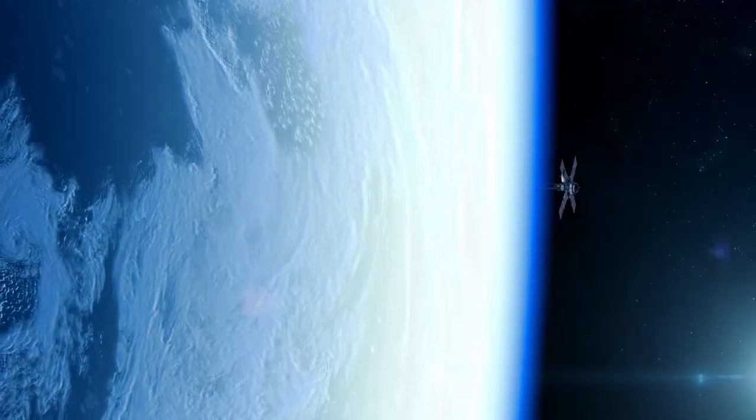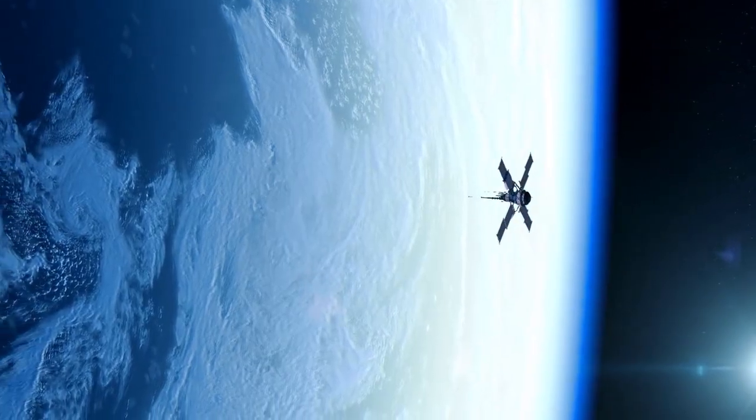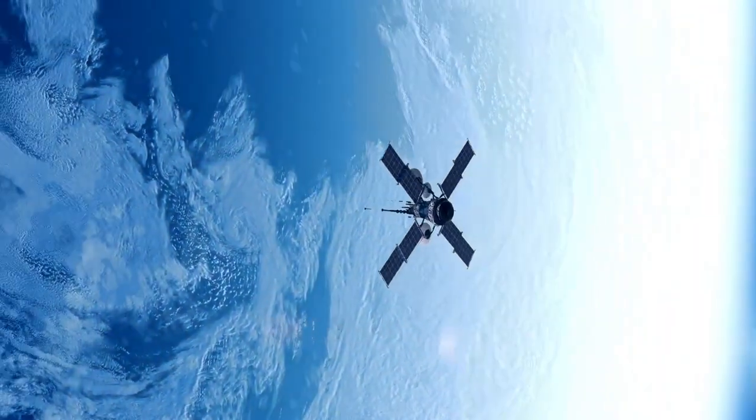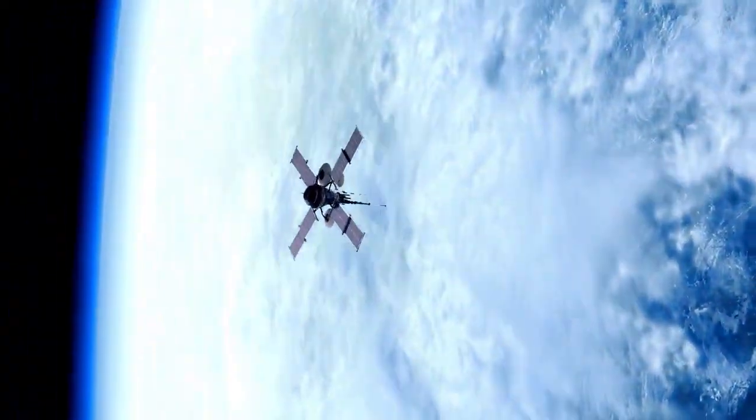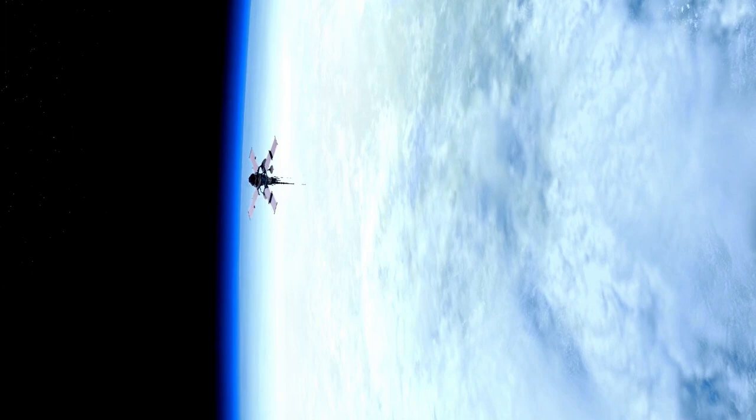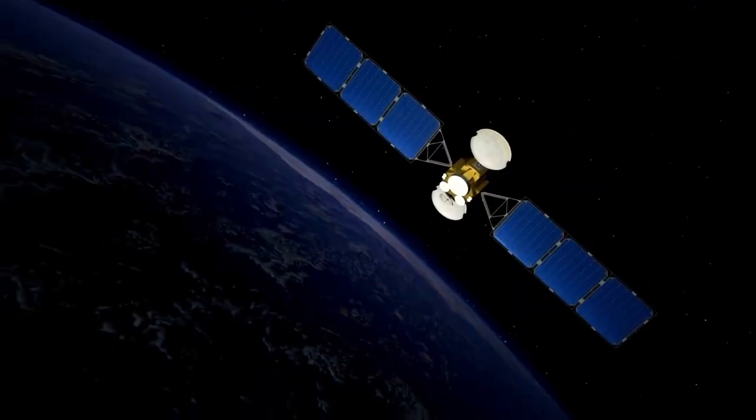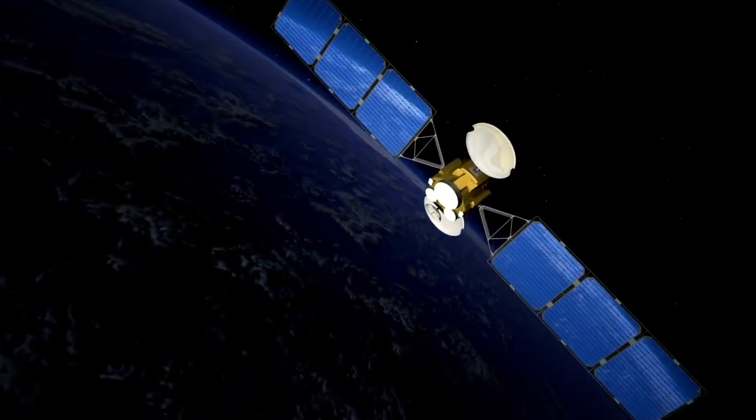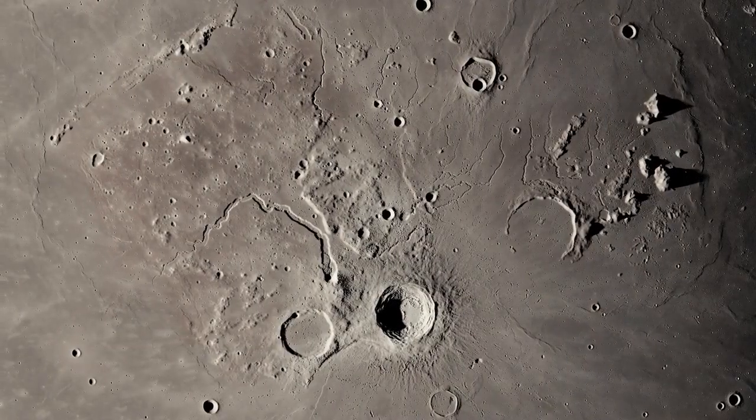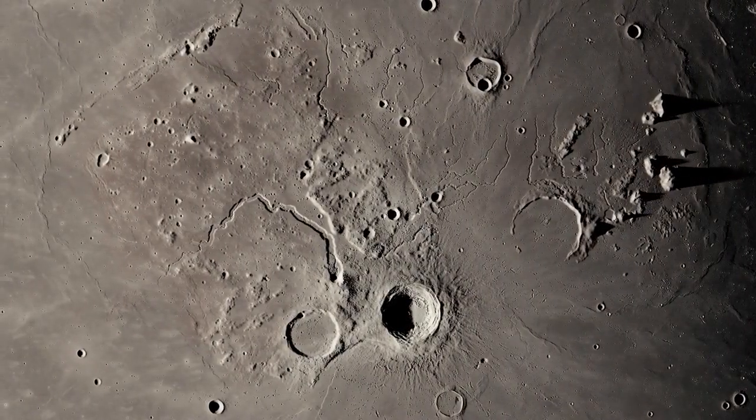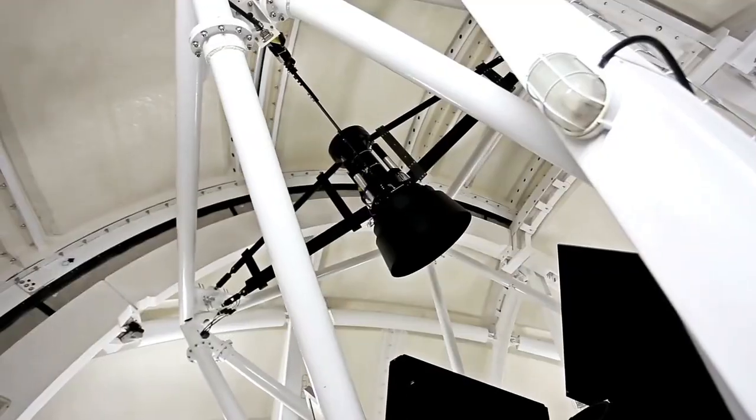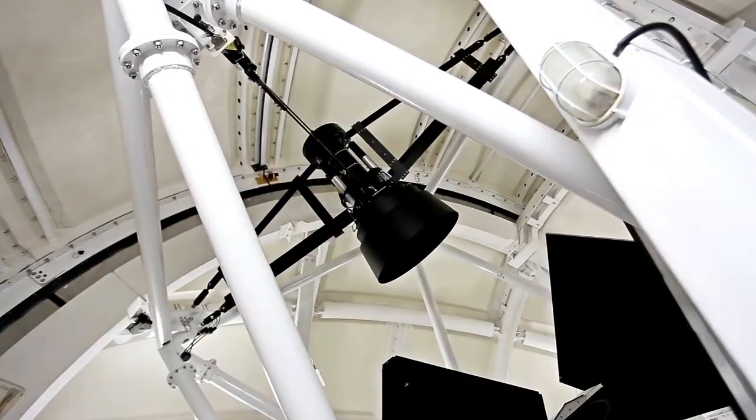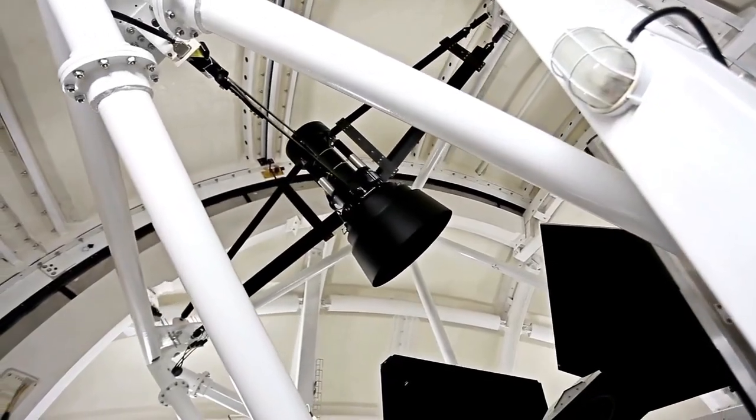New Horizons gave us our first close-up views of Pluto's surface, revealing a surprisingly dynamic and complex world. But it was the James Webb Space Telescope that allowed us to peer deeper, uncovering the mysteries beneath Pluto's icy shell. Webb's incredible infrared capabilities provided a breakthrough, revealing organic molecules and tidal heating clues to Pluto's hidden potential. This wasn't just a discovery about Pluto. It opened new doors in the search for life across the cosmos.